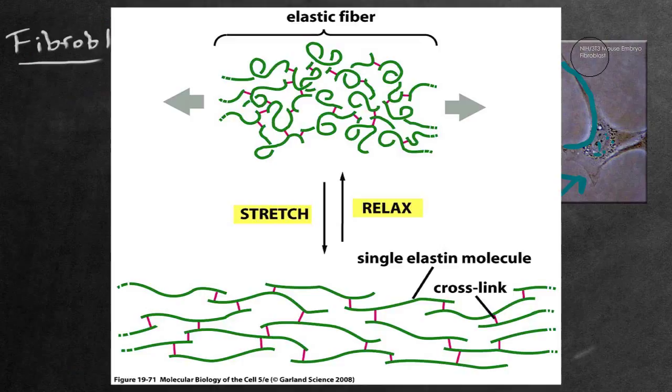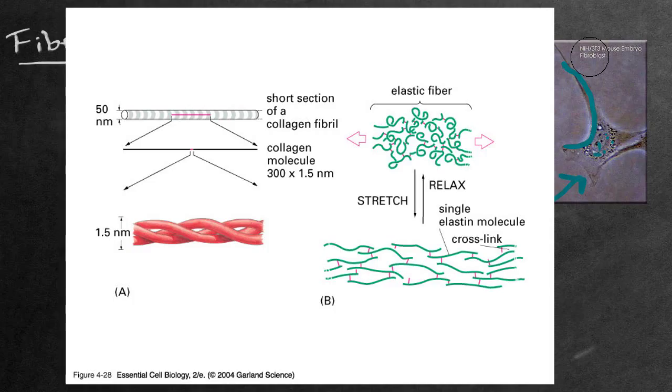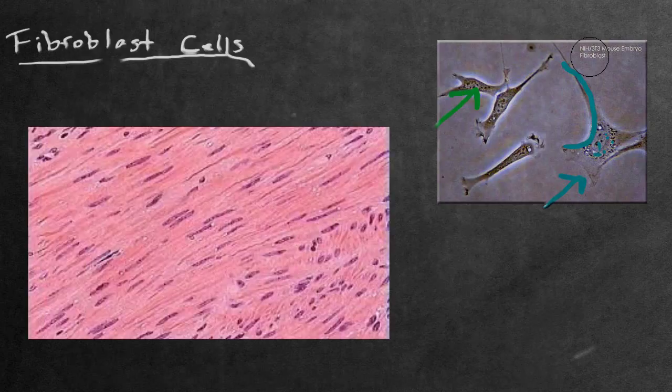Another interesting product is the elastic fiber that fibroblasts make. These are bundles of protein called elastin found inside the extracellular matrix of connective tissue, most commonly in smooth muscle and arteries.